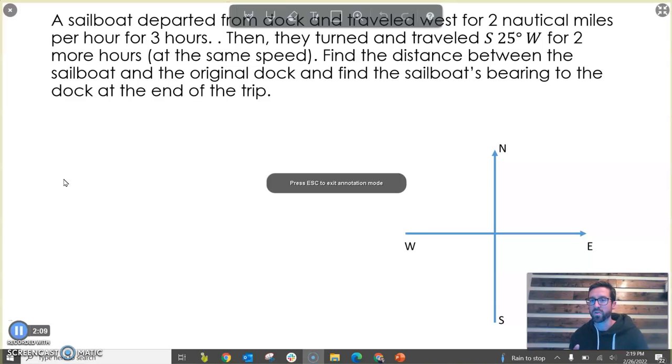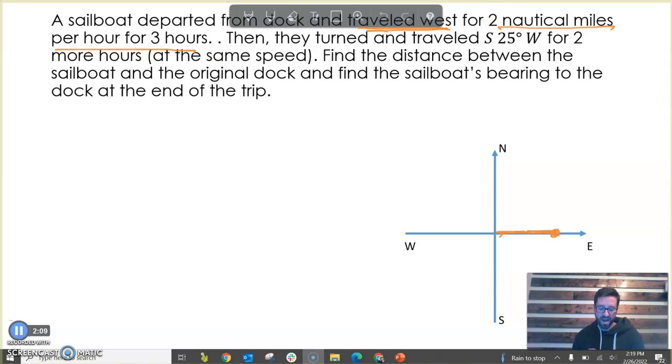But our first thing we got to do is let's illustrate what this looks like. Let's map the path of the ship. So they start off, they're traveling two nautical miles per hour for three hours, and they're traveling west there. So I'm going to pick kind of some random point over here and I'm going to travel west. And if it's two nautical miles per hour for three hours, that means that's six nautical miles. And I like to position this. You might say, hey, why didn't you start at the origin? It's easier for me if I start it somewhere off the origin so that whenever it makes its turn with the bearing, that happens at the origin.